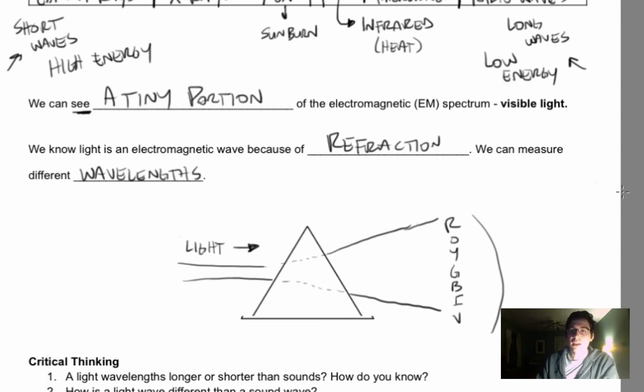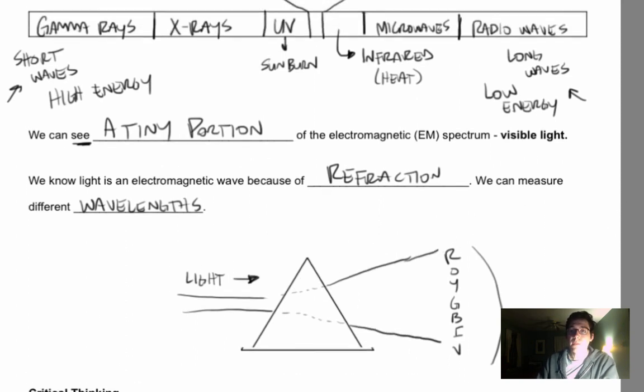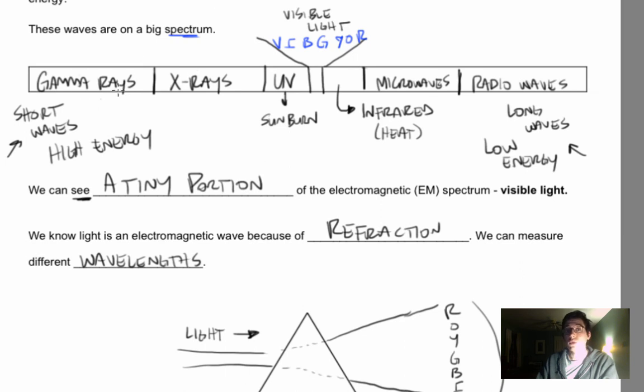So light is electromagnetic. It does not need matter to carry it. So make sure you understand the regions of electromagnetic light or energy on this scale. And if you have questions, you can either leave a comment in the comments below, or I will see you in class.